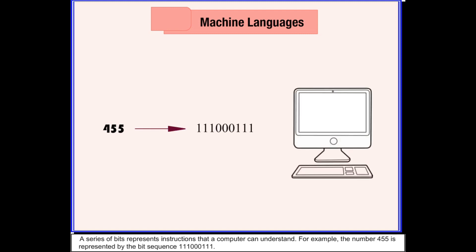A series of bits represents instructions that a computer can understand. For example, the number 455 is represented by the bit sequence 11100111.